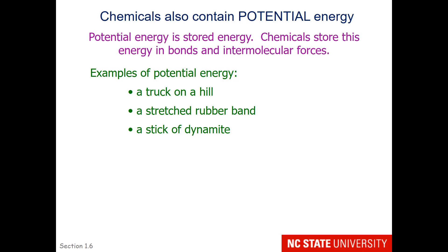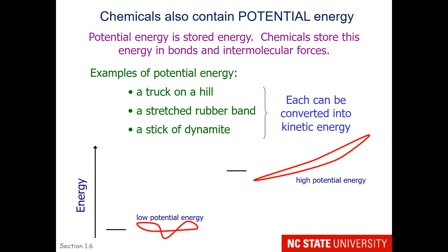A stick of dynamite is an excellent example of chemical energy. As long as it's not too badly aged, it's going to be just fine until you light it and give it some kinetic energy. The energy that materials contain can be rated on a vertical scale — where zero is at the bottom and increasing energy goes up — so a stretched rubber band has high potential energy compared to a loose, floppy rubber band that has low potential energy.